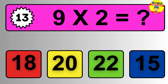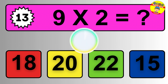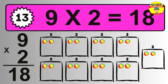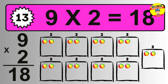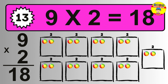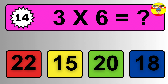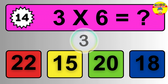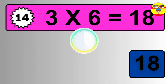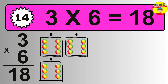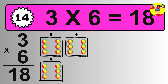Question thirteen: nine times two equals what? The answer is nine times two is eighteen. Question fourteen: three times six equals what? The answer is three times six is eighteen. To calculate, we have three groups with six balls each. So how many balls do we have? Eighteen balls.